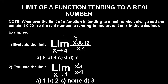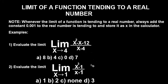Example one: evaluate the limit as x tends to 4, where the numerator is x squared minus x minus 12 and the denominator is x minus 4. Let's bring the calculator to solve this problem together.